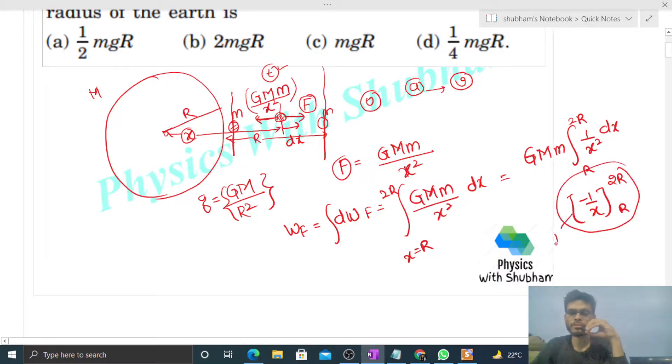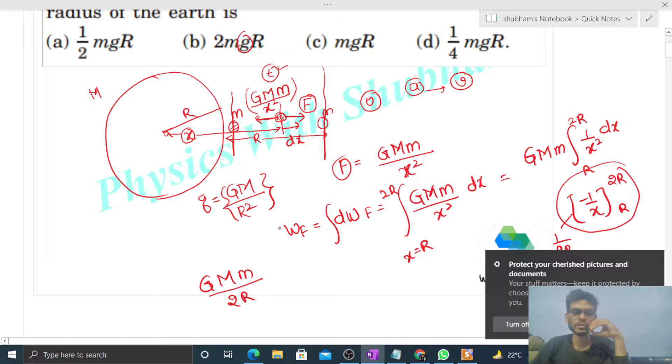So let me tell you the final answer: capital G capital M m divided by 2r. Now we want answer in terms of small g. So let's do one thing, multiply and divide it by r. So the r in denominator becomes r square, and capital G capital M by r square, what is this? This is g, small g. So mgr by 2 is the answer.